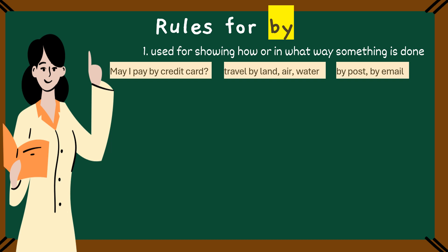Children, may I pay by credit card means that paying is done using a credit card. You can travel by land, air or water. It's telling us the different ways or means of traveling. And the last one, I send the letter by post. Here by is showing that the letter is sent through the method of post or email.